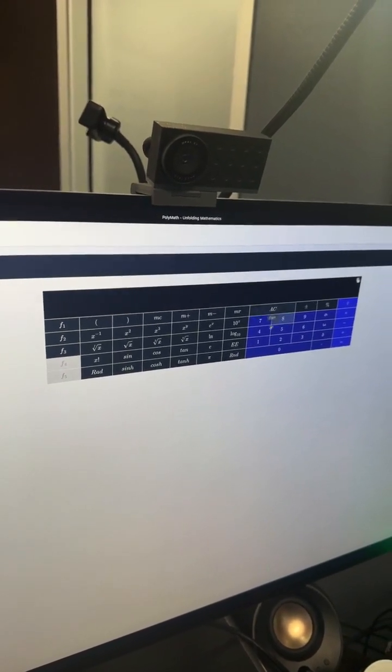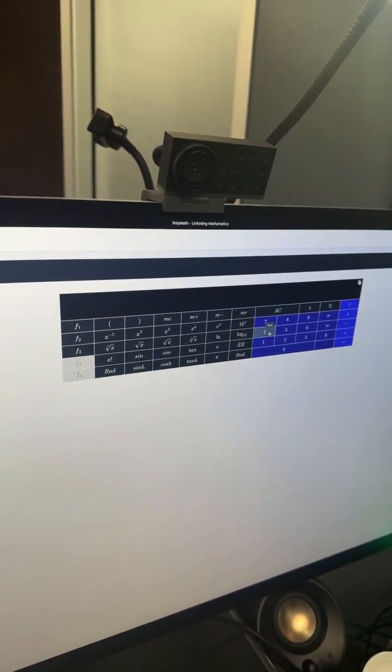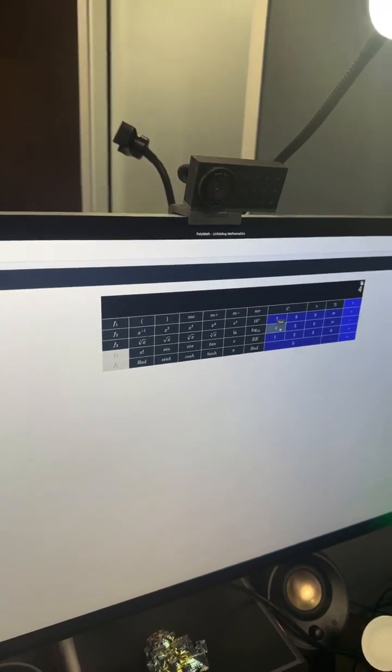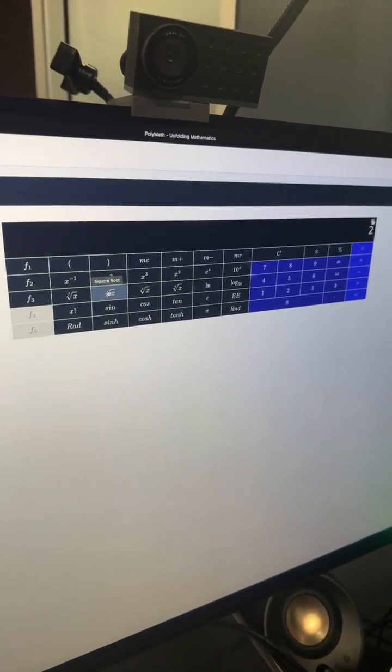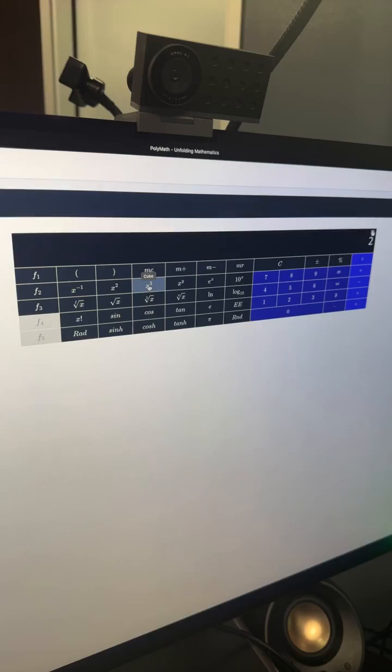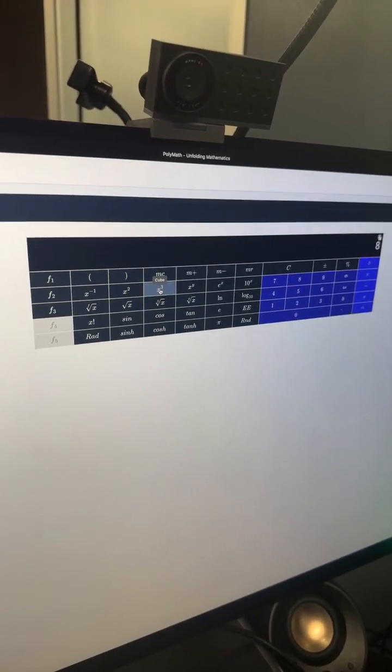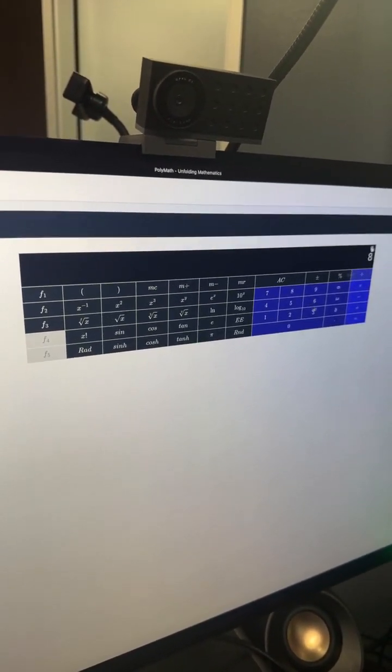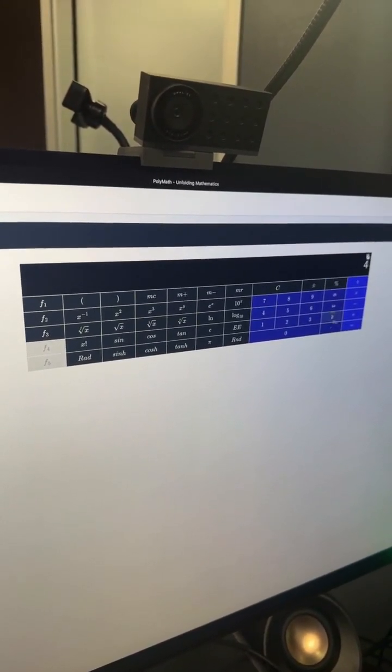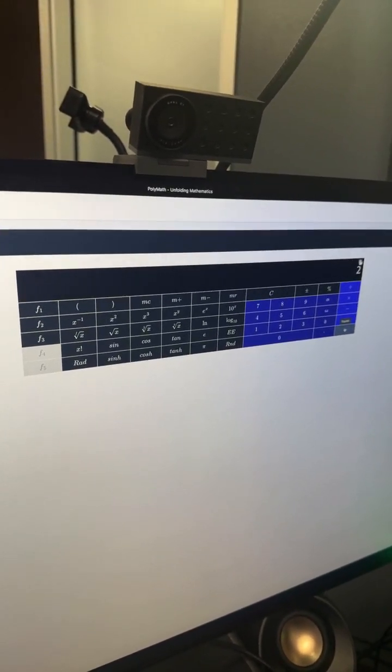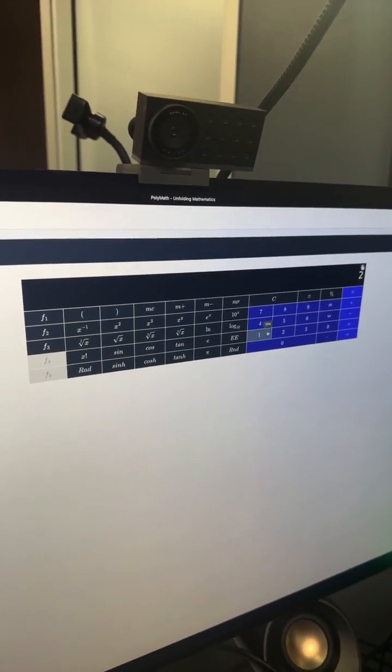So what if we do this with the number four and taking the square root of four? So the square root of four equals two. We take it to the third power, which equals eight, and now we're going to divide it by four. That was the number we started with, and it equals two, which is the square root of four.